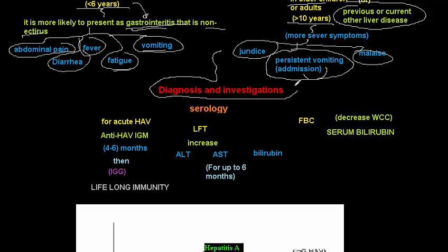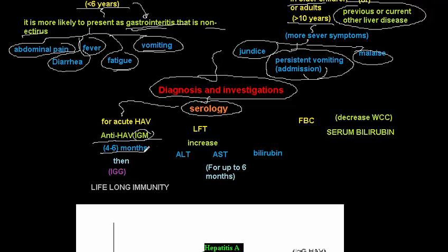For diagnosis and investigation of hepatitis A, serology is used. For acute hepatitis A, we find anti-HAV IgM, which lasts four to six months after the start of infection. The IgM then transitions to IgG, which provides lifelong immunity. Neither PCR nor stool antigen is diagnostic — only IgM is diagnostic for acute hepatitis A.